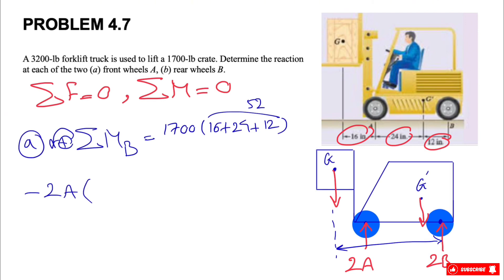And we have this time the moment of the 2A. As we can see, this moment is clockwise, so we have a negative sign. 2A is our force, and the distance will be 12 plus 24, which will be 36. And the last force is the weight of the truck, same direction as the crate, so it's going to be a counterclockwise moment, so positive.